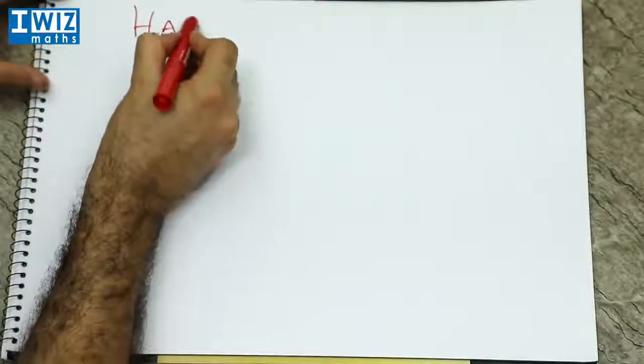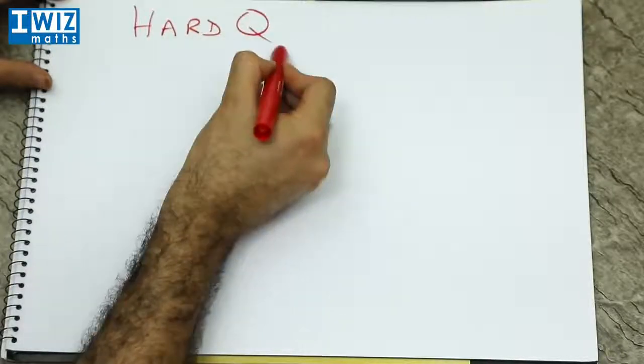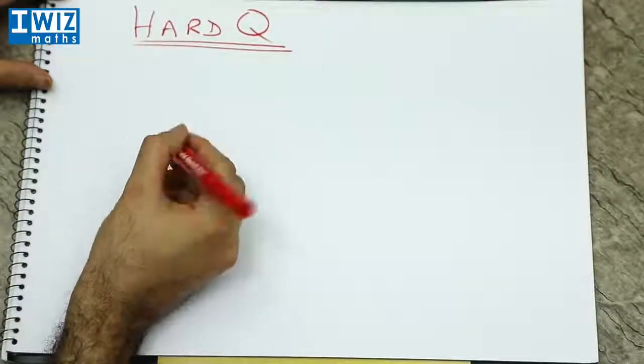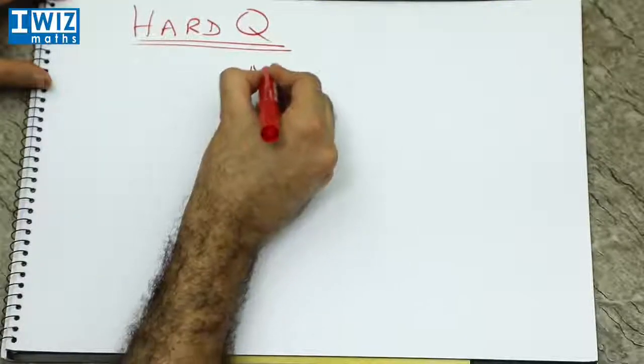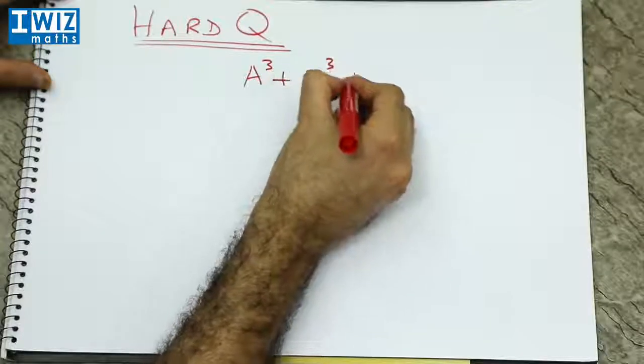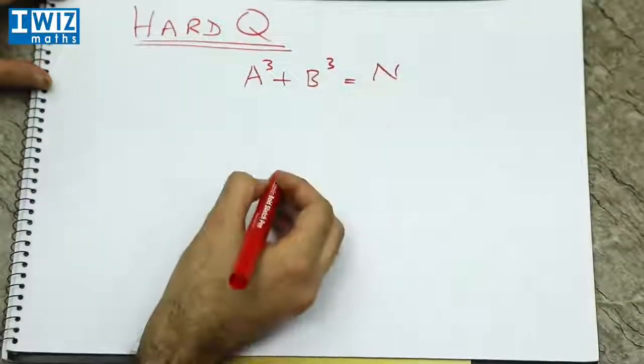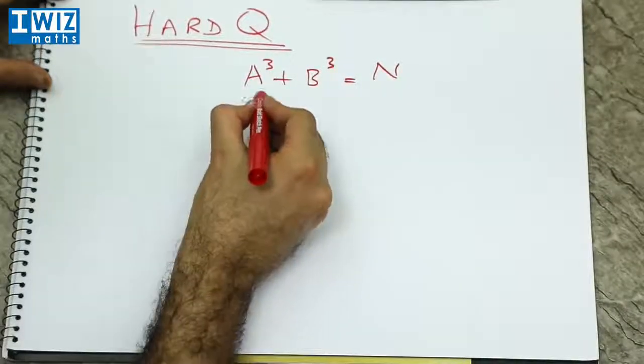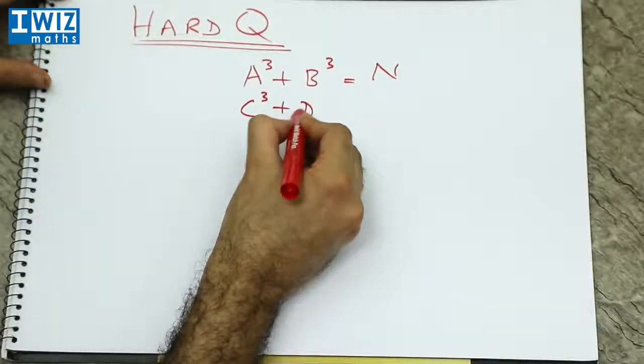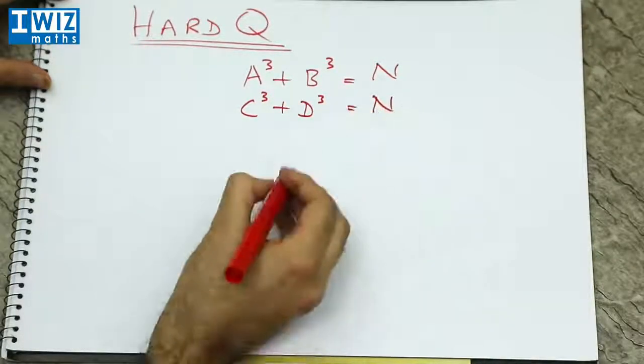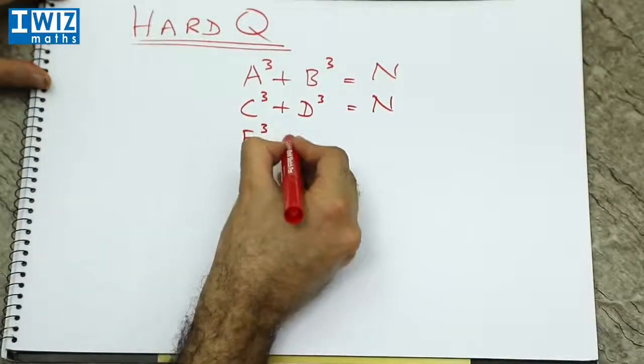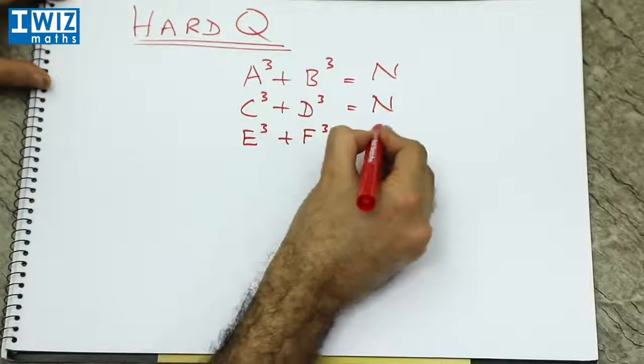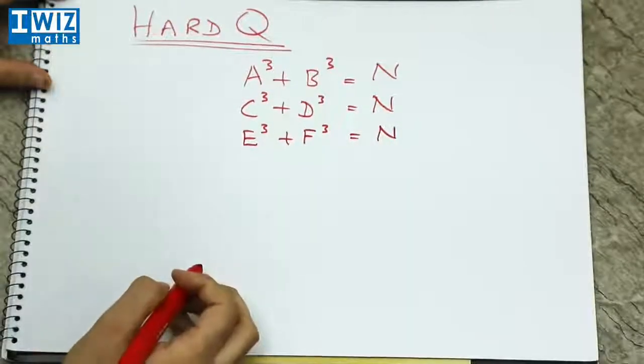Let's give a hard question. This is actually quite a hard question. And the question is the following: consider that we have a cube plus b cube equal to some number n, and we have c cube plus d cubed equal to the same number n, but now we also want e cubed plus f cubed equal to the same number n.